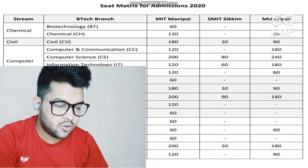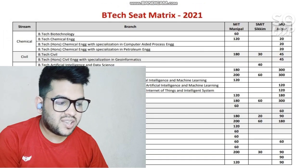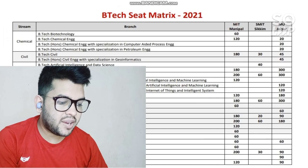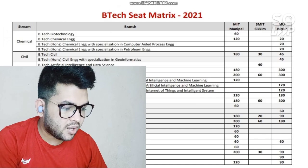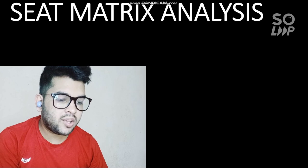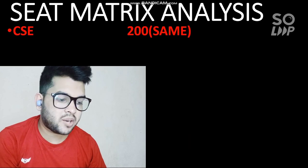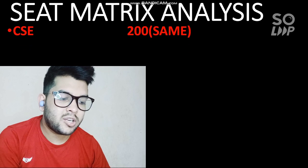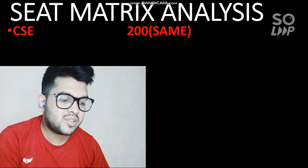Here is the 2021 seat matrix. For Data Science in the Jaipur campus and IT in the main campus there is an increment. Now I will do the analysis of the seat increment and what you can expect for the cutoff. For CSC, only 200 seats are available in the main campus, which is similar to last year.